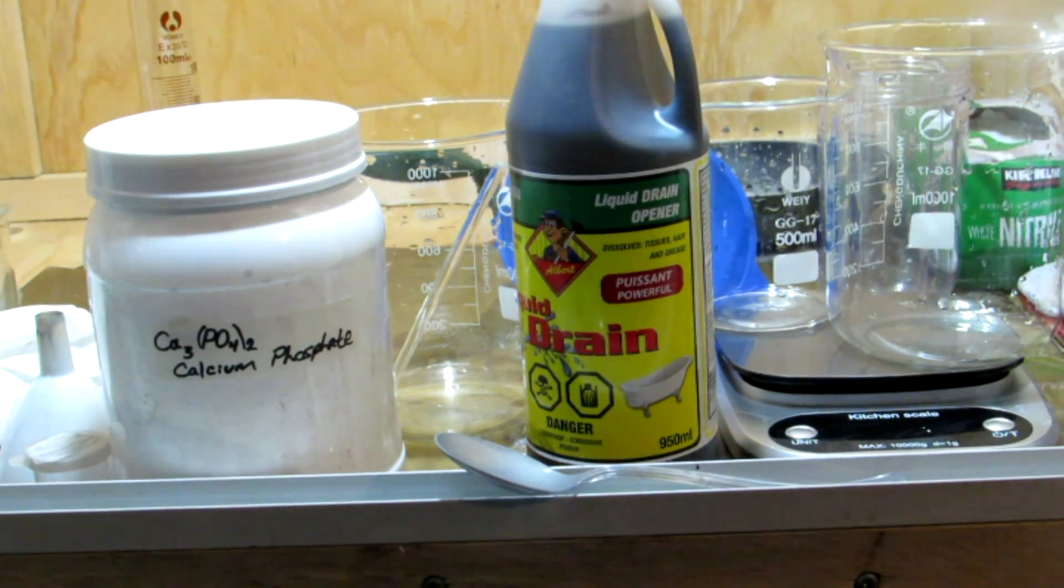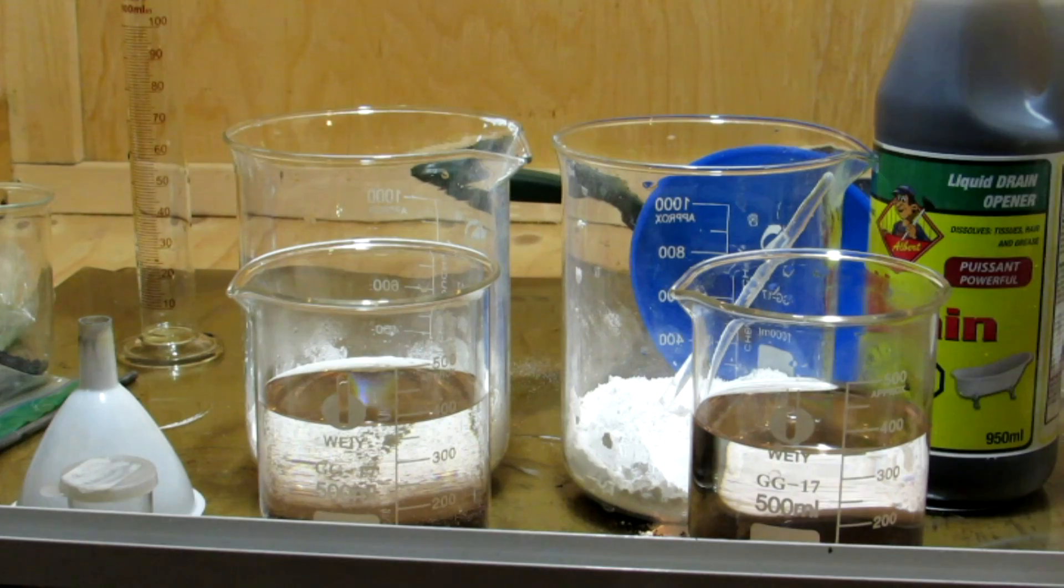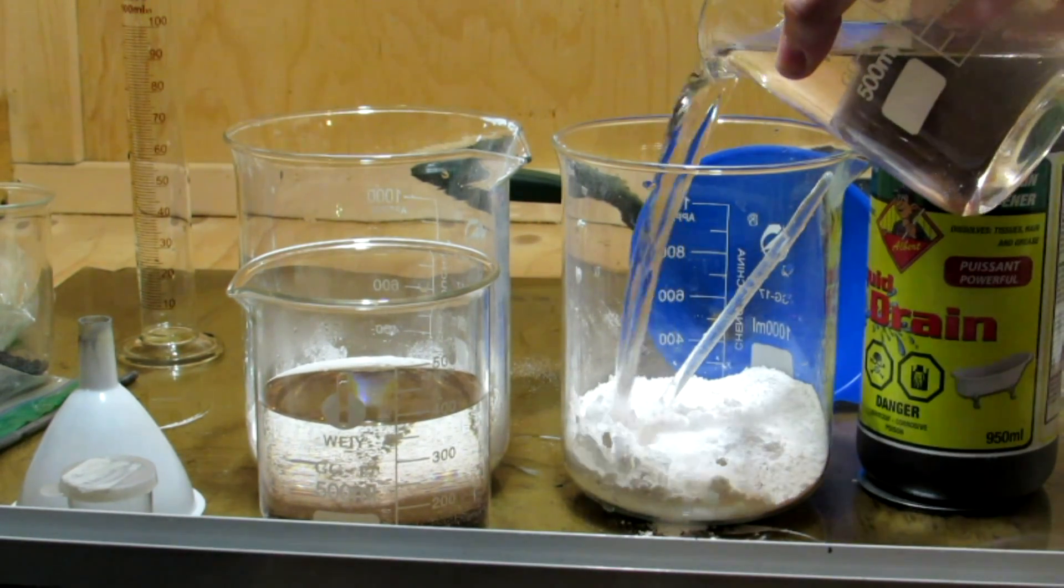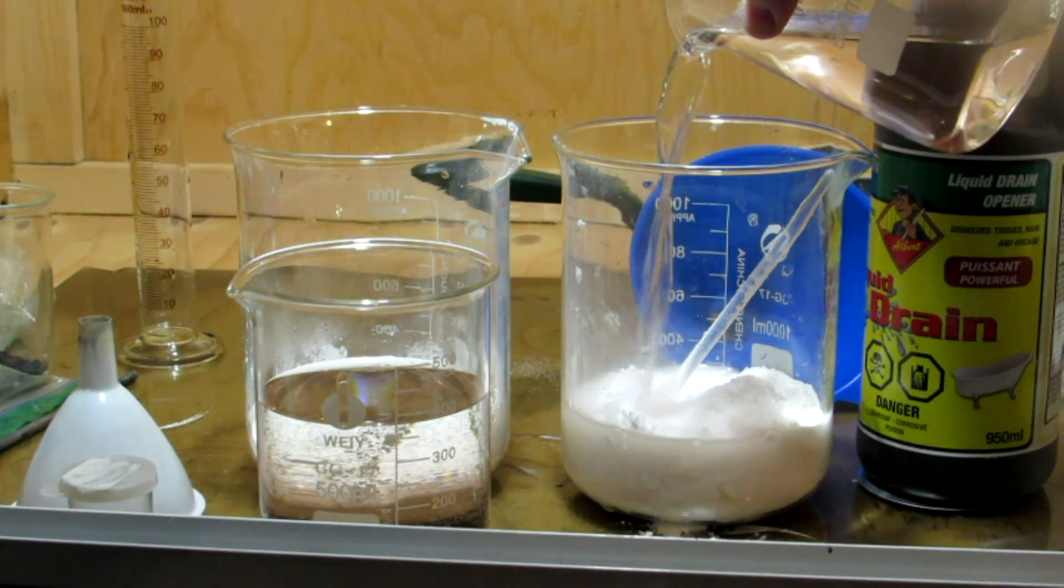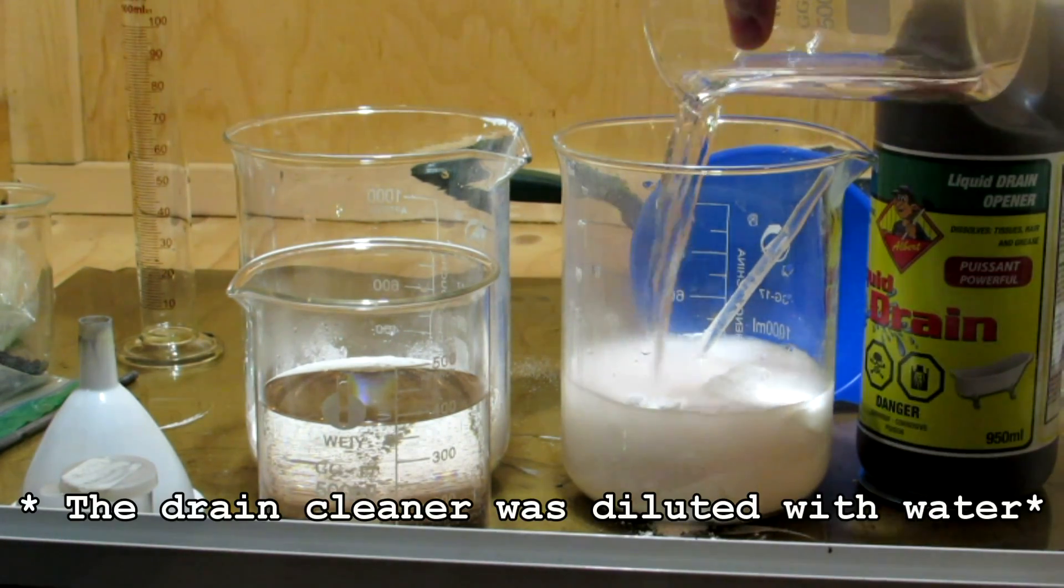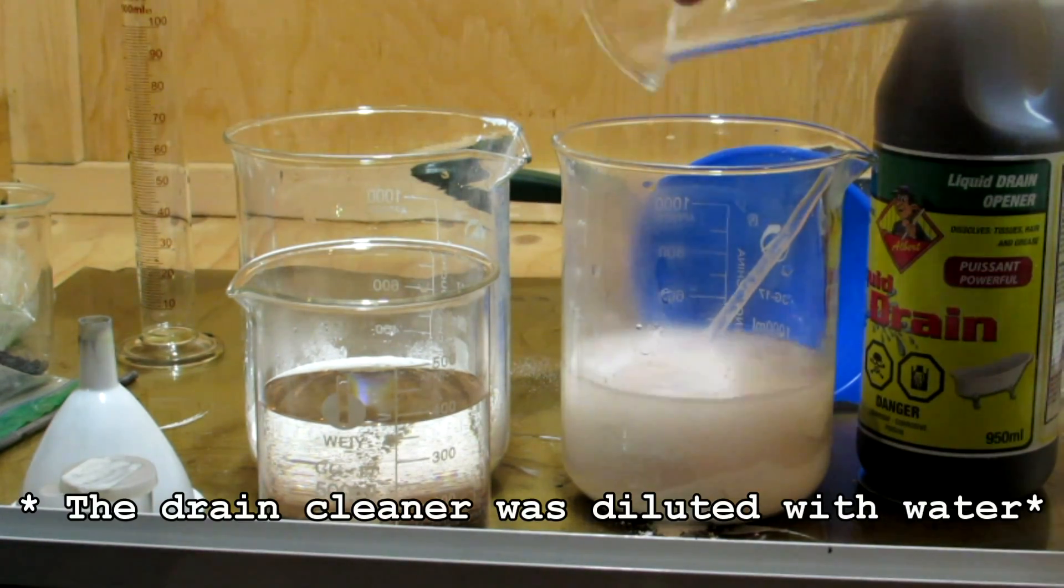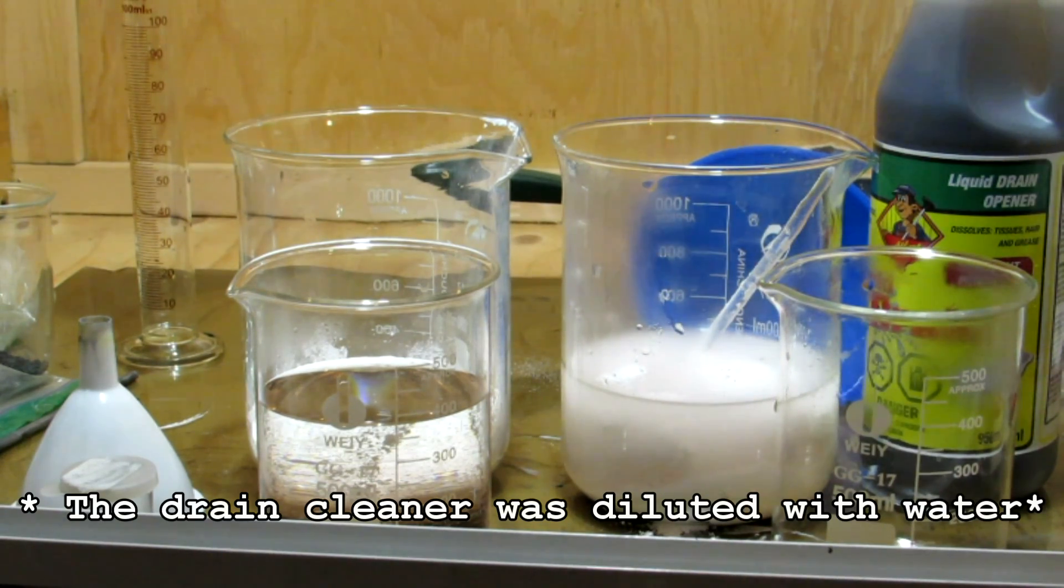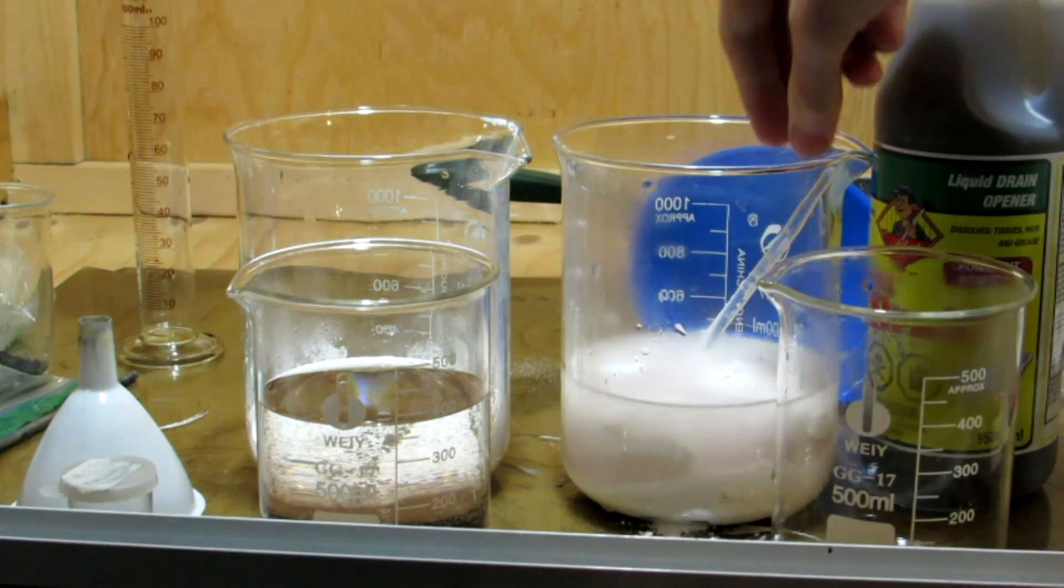To begin, I split this up into two batches, but we need 250 grams of calcium phosphate, so I put 125 grams per beaker. Next we'll need about 66.6 milliliters of 93 percent drain cleaner. As I mentioned, I got this from Rona.